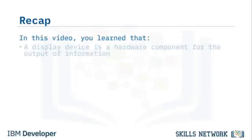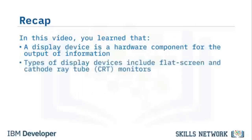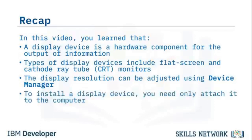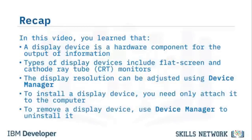In summary, a display device is a hardware component for the output of information. Types include flat screen and CRT monitors. Display resolution can be adjusted using Device Manager. To install a plug-and-play display device, simply attach it to the computer. To remove one, use Device Manager to uninstall it.